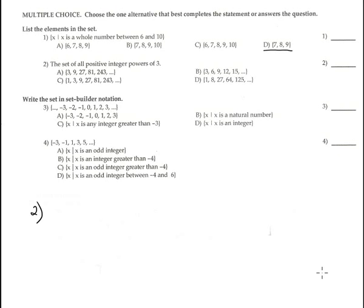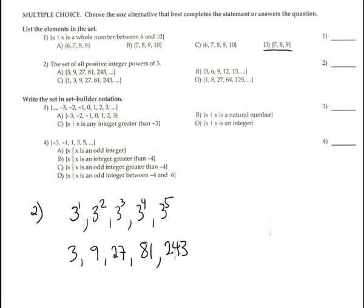Number 2 is the set of all positive integral powers of 3. Powers of 3 is 3 to the 1, 3 to the 2nd, 3 to the 3rd, 3 to the 4th, 3 to the 5th, and so on. This is 3, this is 9, this is 27, this is 81, this is 243, and this continues forever. This is corresponding with option A. Option A is correct.